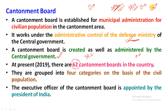For Category 1, which has a population of 50,000 or more, the large population board includes a military officer, an executive engineer, and a first class magistrate, also known as the district magistrate.